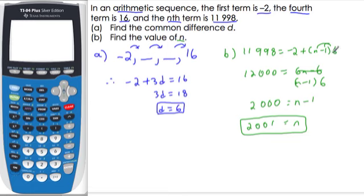then use that result in combination with the first term and the formula from the formula booklet for arithmetic sequences, substitute in the term that we are given, and solve for n, giving us 2,001.